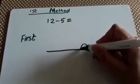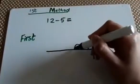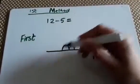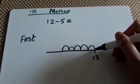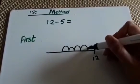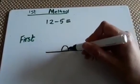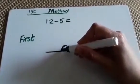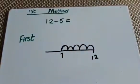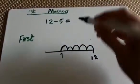1, 2, 3, 4, 5. Now we're going to count backwards from 12: 11, 10, 9, 8, 7. So we know that 12 minus 5 equals 7.